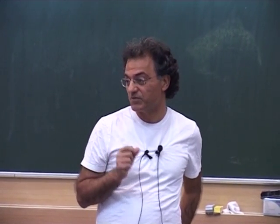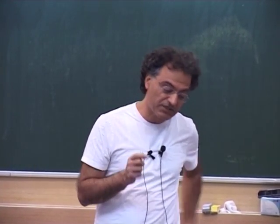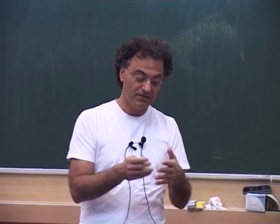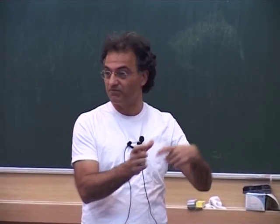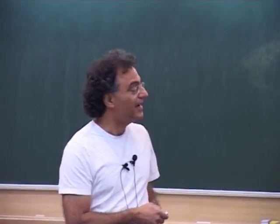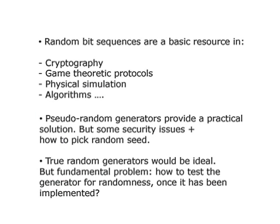True random number generators suffer from various problems — finding good sources of randomness that you can exploit repeatedly over time, and the generator has to work over many conditions. Underlying it all is this philosophical question: how do you test whether your random number generator is good, even if you built the perfect one? So really this talk is focused on the philosophical question of whether we can or cannot test randomness, not on the practical versions.